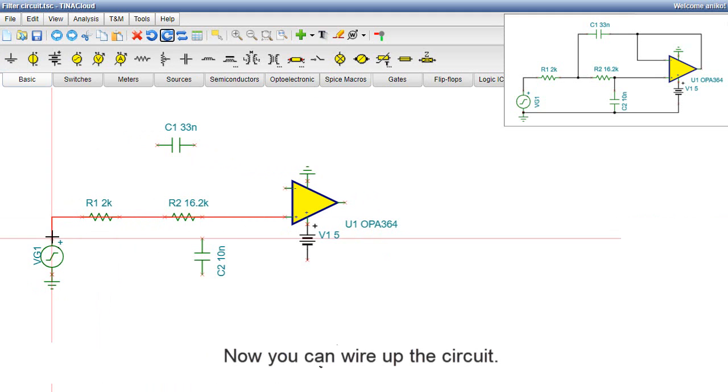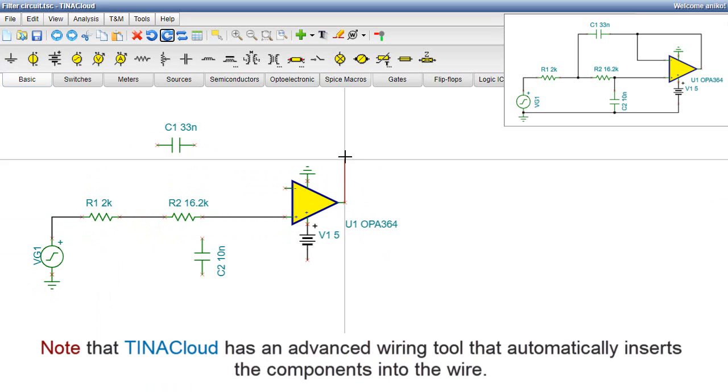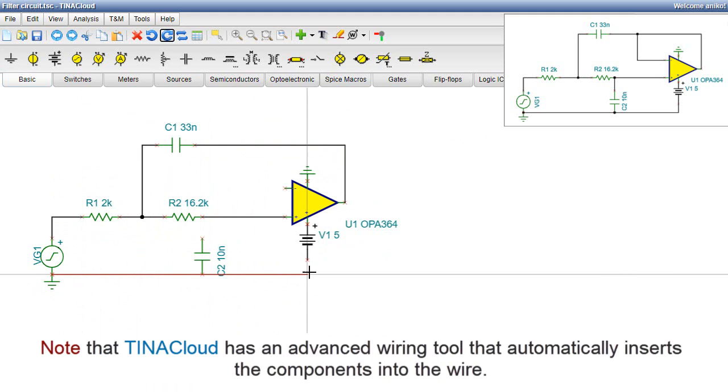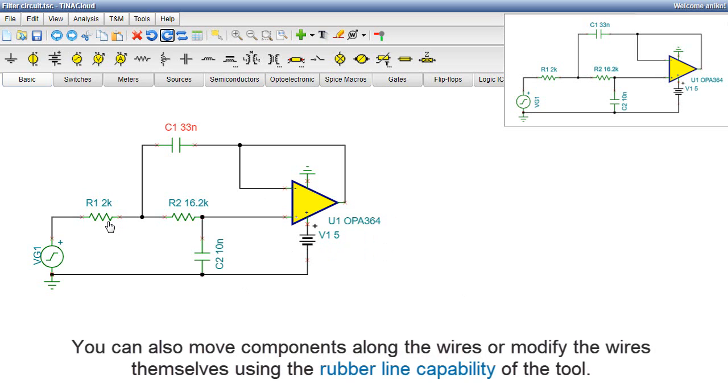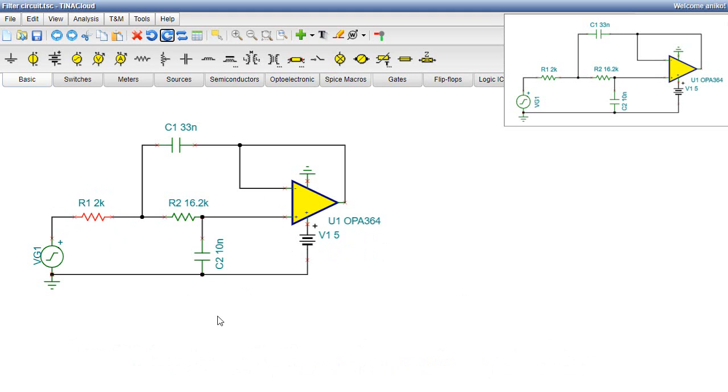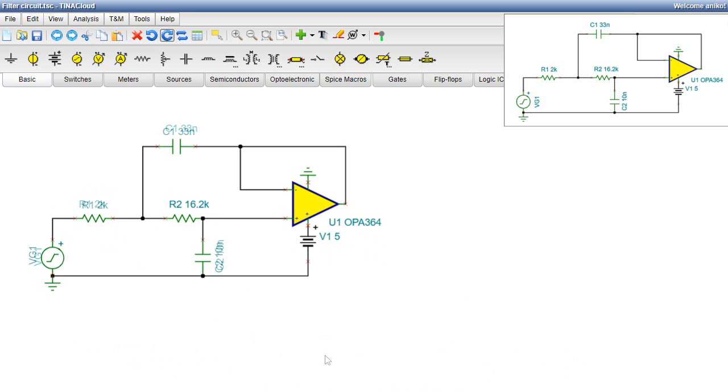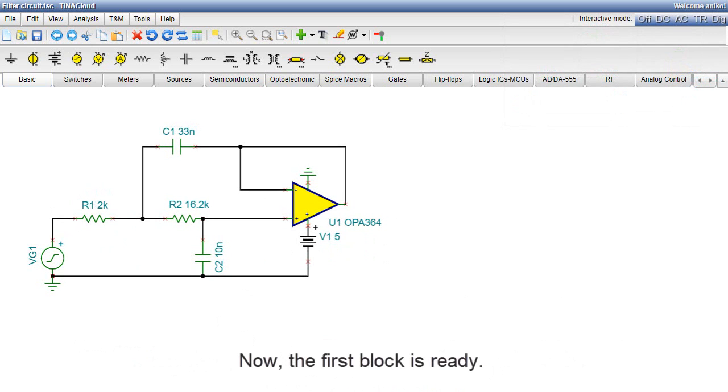Now, you can wire up the circuit. Note that TINA Cloud has an advanced wiring tool that automatically inserts the components into the wire. You can also move components along the wires or modify the wires themselves using the rubber line capability of the tool. Now, the first block is ready.